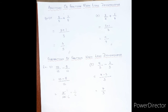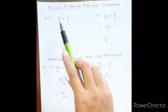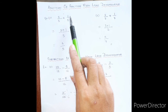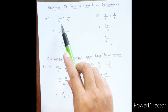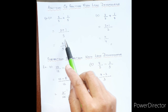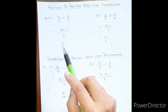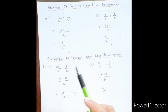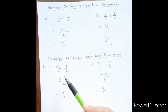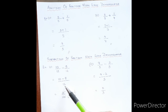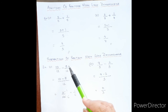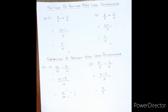Today we have seen two topics. For addition of fractions with like denominators, we just add the numerators — since the denominator is the same, we take the common denominator and add. For subtraction of fractions with like denominators, we write the common denominator and just subtract the numerators to get the answer. Thank you, students.